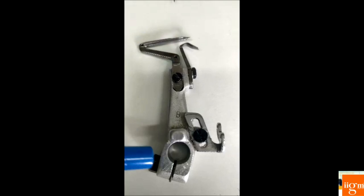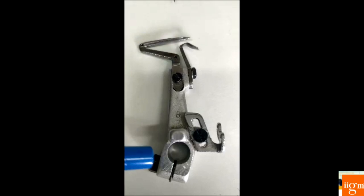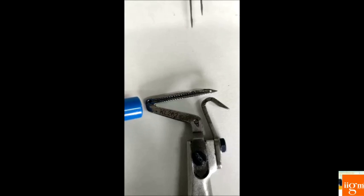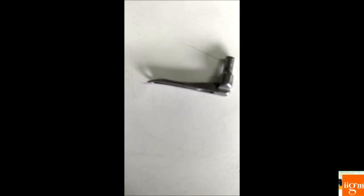This is the difference between 3 thread, 4 thread, 5 thread and 6 thread overlock machines. In overlock machine, very important part is lower looper. This is the lower looper complete set and this is the lower looper. This is the main part which makes overlock formation with the support of upper looper. Lower looper and upper looper makes overlock formation.